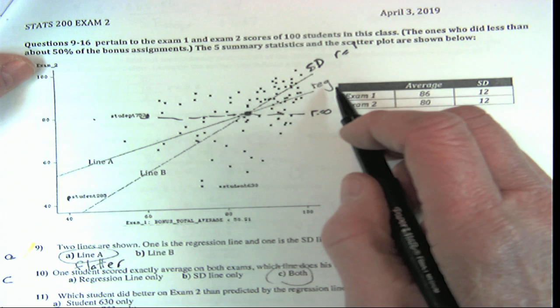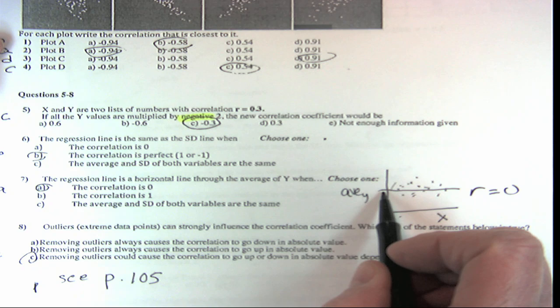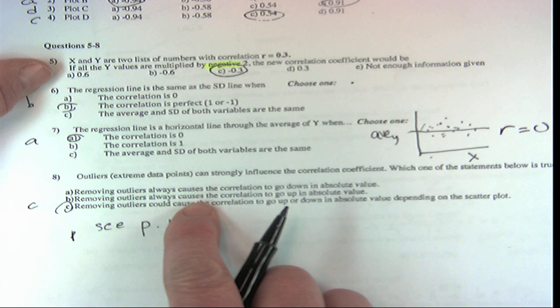When the regression line has r equal to zero, it goes right through the average of the y's. The idea is: r equals zero just means that whatever x is tells you nothing about y, so the best prediction is the average of y. Now, removing outliers always causes the correlation to go down, up, or it could go either way.